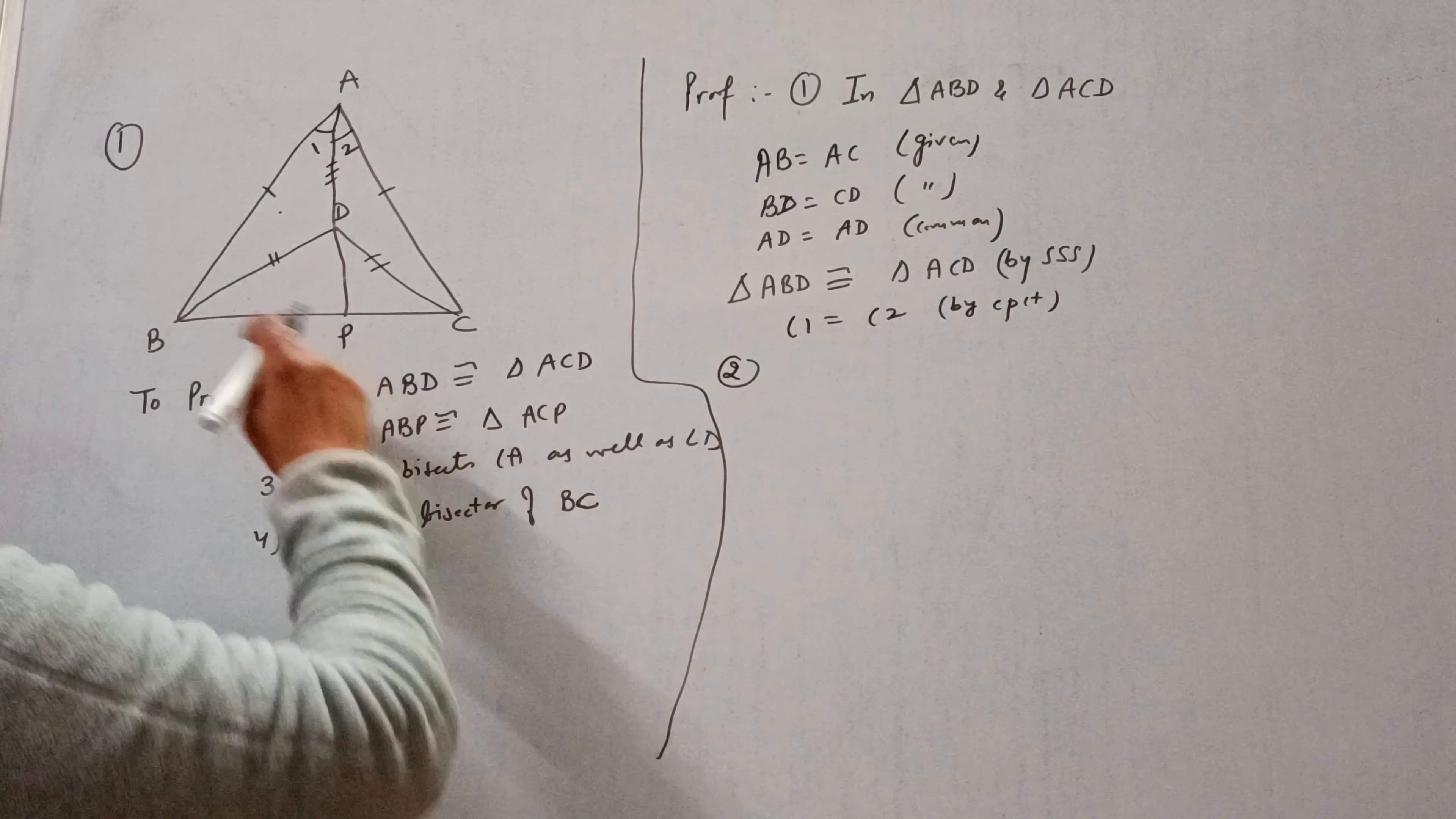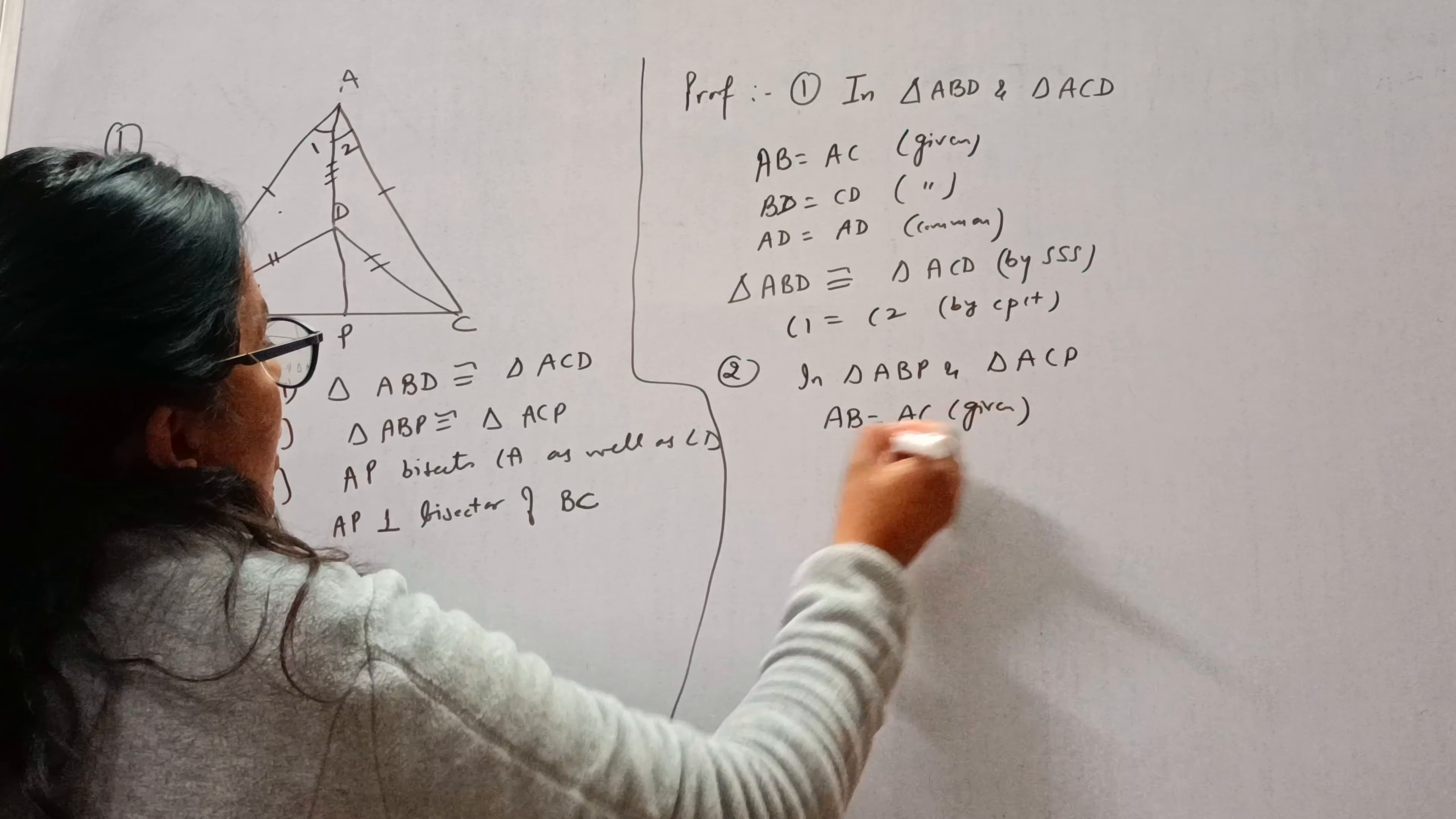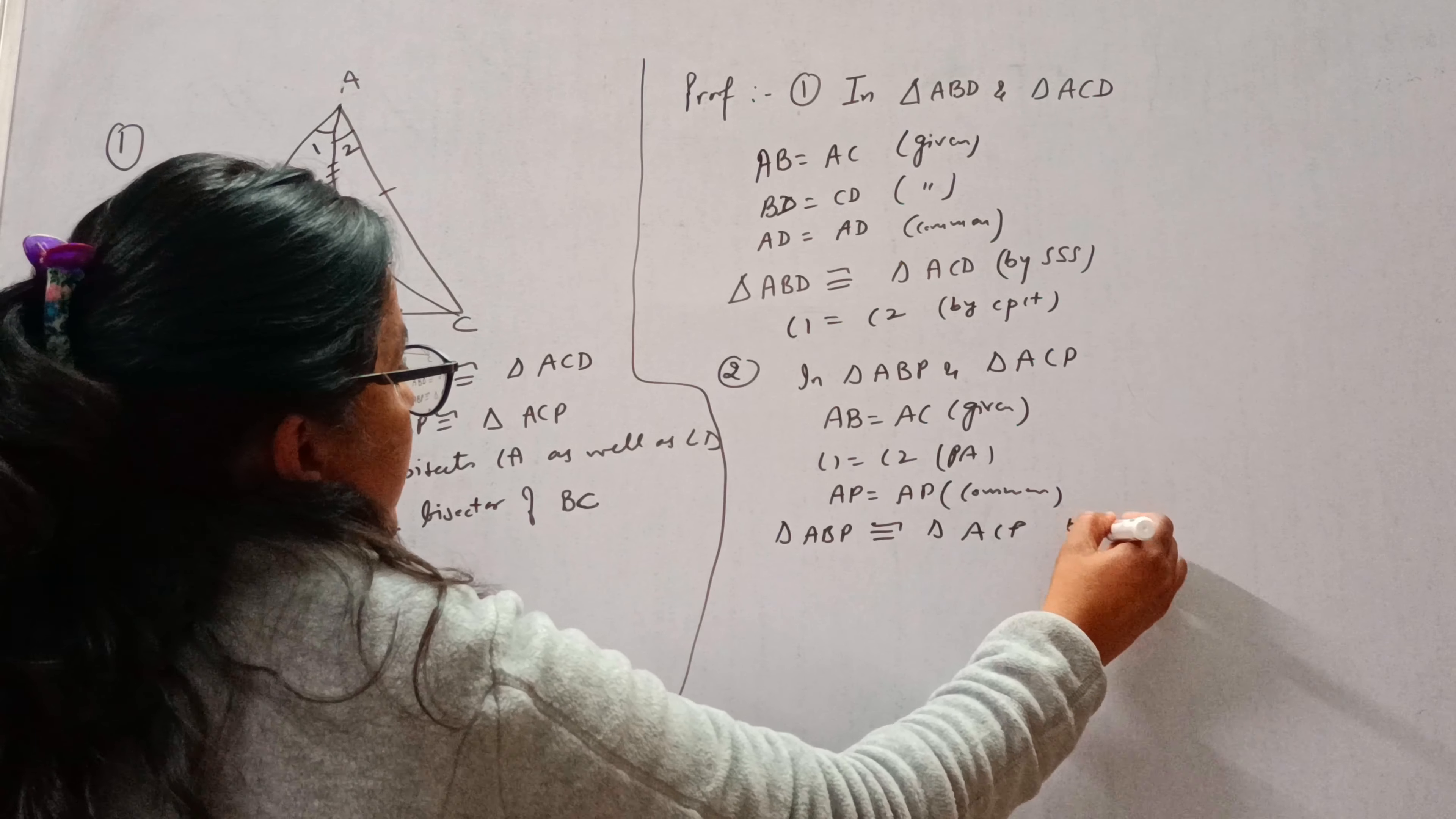Now see part 2. Take triangle ABP and triangle ACP. Again, AB is equal to AC, it is given. Angle 1 equal to angle 2, proved above. And AP is common.